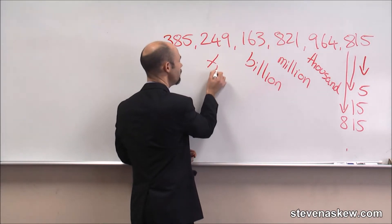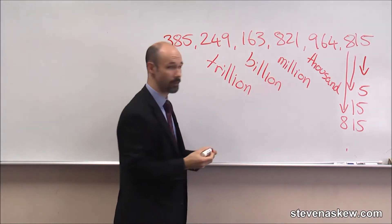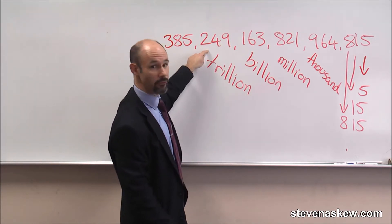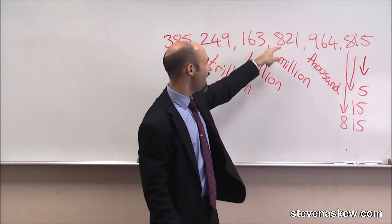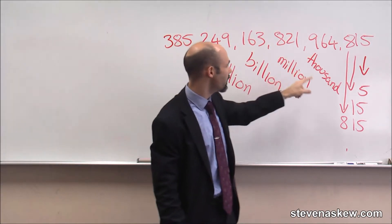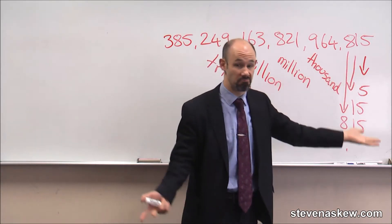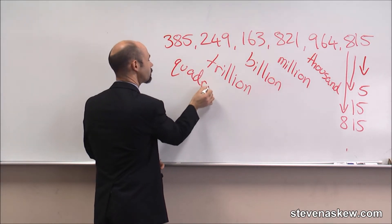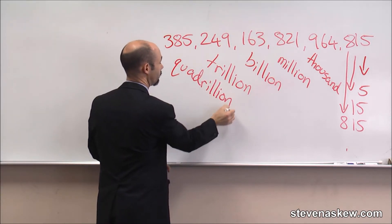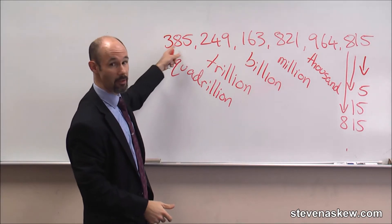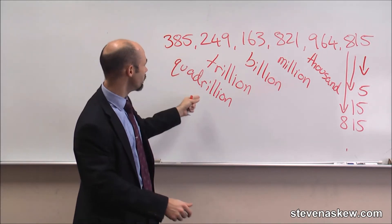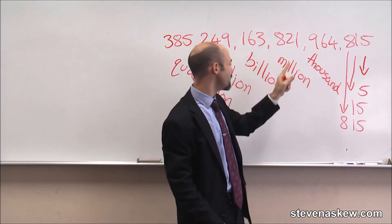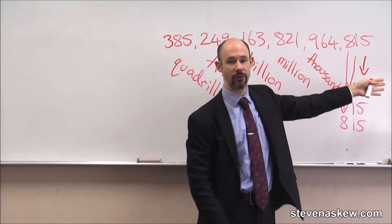Then we go up into the trillions. Same thing — nine, forty-nine, two hundred and forty-nine. Two hundred and forty-nine trillion, one hundred and sixty-three billion, eight hundred and twenty-one million, nine hundred and sixty-four thousand, eight hundred and fifteen. And you probably won't need to go this high, but the next one is quadrillion. Five, eighty-five, three hundred and eighty-five. Three hundred and eighty-five quadrillion, two hundred and forty-nine trillion, one hundred and sixty-three billion, eight hundred and twenty-one million, nine hundred and sixty-four thousand, eight hundred and fifteen.